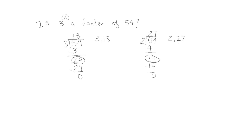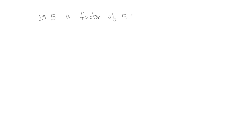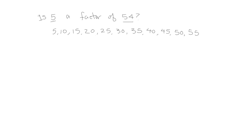Let's see if 5 is a factor of 54. Now we know when we divide, we're putting things together into equal size groups. So another thing I could do to figure out if 5 is a factor is count by 5s, making equal size groups: 5, 10, 15, 20, 25, 30, 35, 40, 45, 50, 55. And I've now gone past my dividend, and I never said 54.